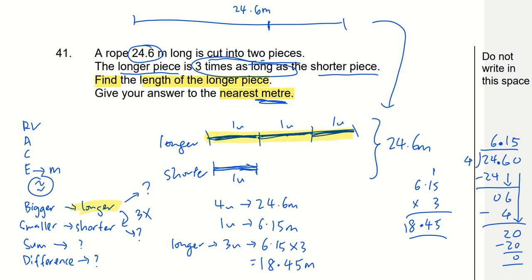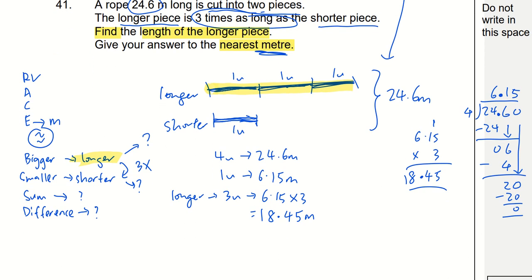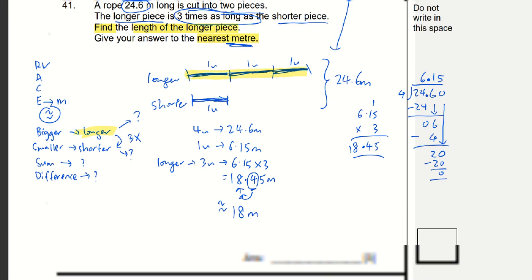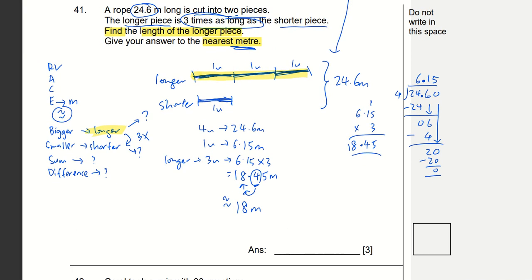I need to do rounding because it gives to the nearest meter. So nearest meter will be looking at the one's place. I have to round to the nearest meter. That will be 18 meters. So that will be the last step of rounding. My answer will be 18 meters after rounding.